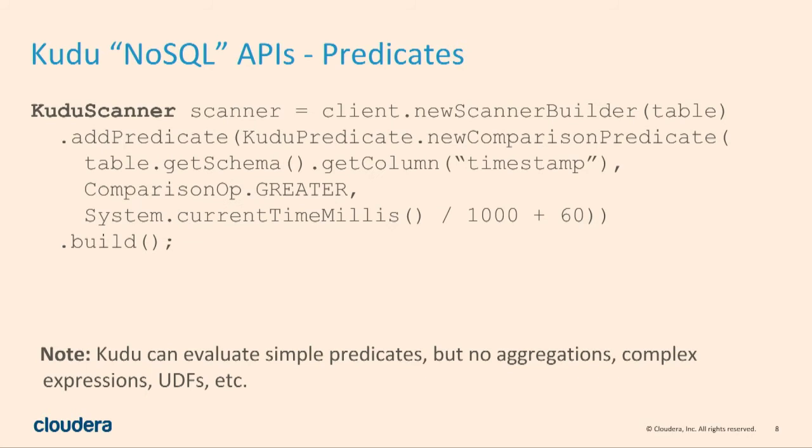We also offer some basic predicates for the API. If you want to say, give me all this stuff in the last minute, you can create a predicate on the timestamp column using current time millis. But the API doesn't give you anything complicated. Kudu is not a SQL database — you can't do a group-by aggregate, you can't do a join. The API is really this elemental, low-level access to storage.